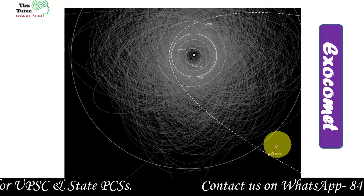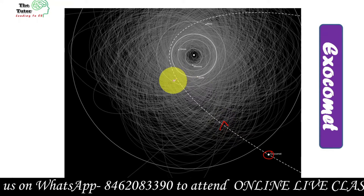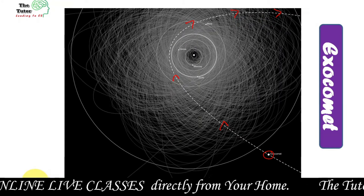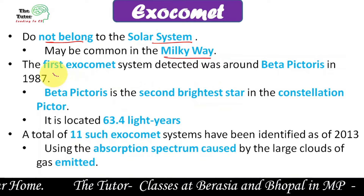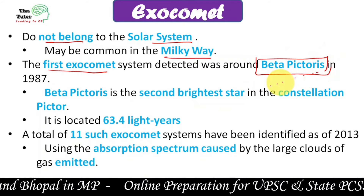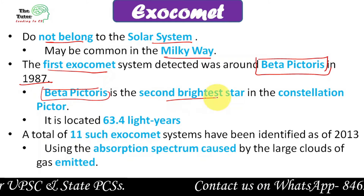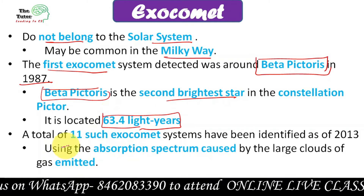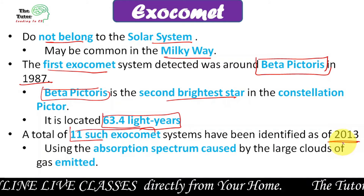Exocomets are comets that do not belong to our solar system. They enter into our solar system, revolve around the sun, and after many years go beyond our solar system. Exocomets may be common in the Milky Way. The first exocomet was found in the constellation known as Beta Pictoris, detected in 1987. Beta Pictoris is the second brightest star constellation and is 63.4 light years from our sun. According to data from 2013, almost 11 such exocomet systems have been identified.